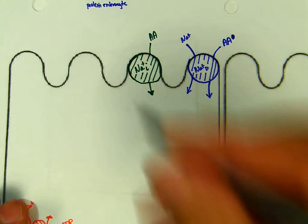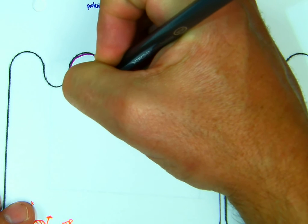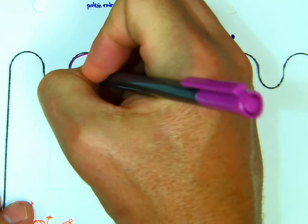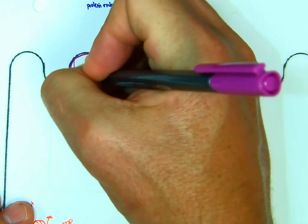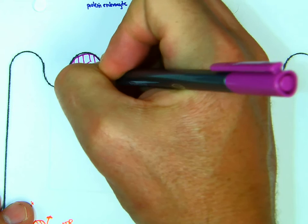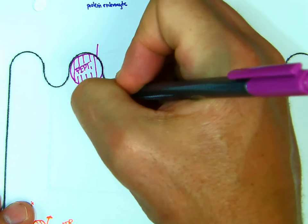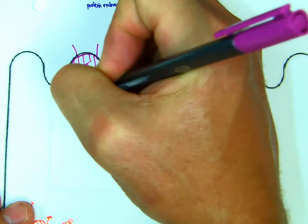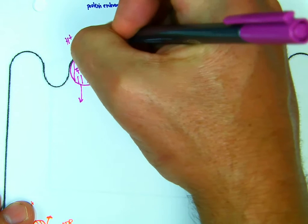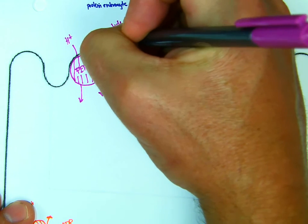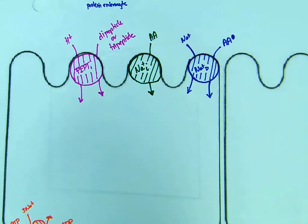The next transporter is PEPT-1. And PEPT-1 is going to be used to transport the di- and tri-peptides into the cell. And so we're going to transport two things: a proton and either a di-peptide or a tri-peptide, one at a time. Can't do both.